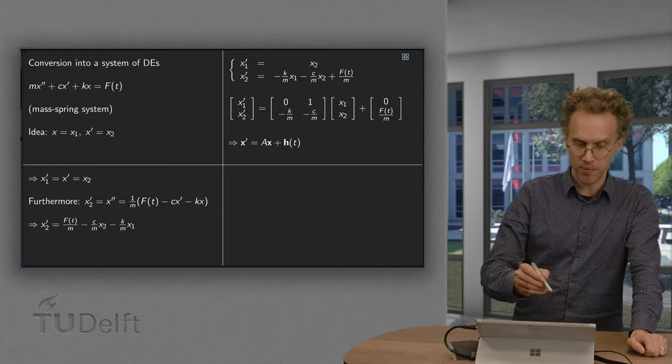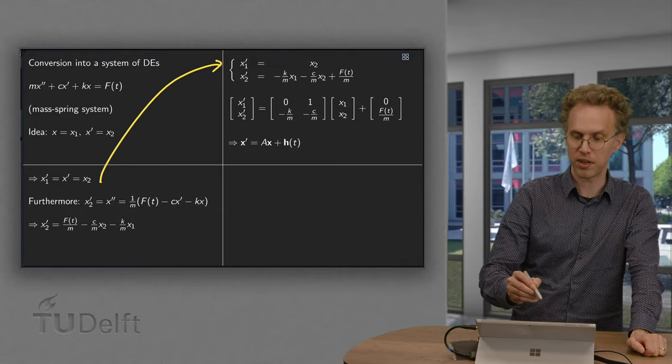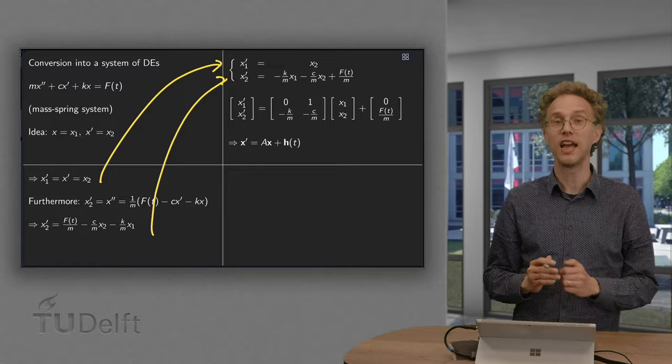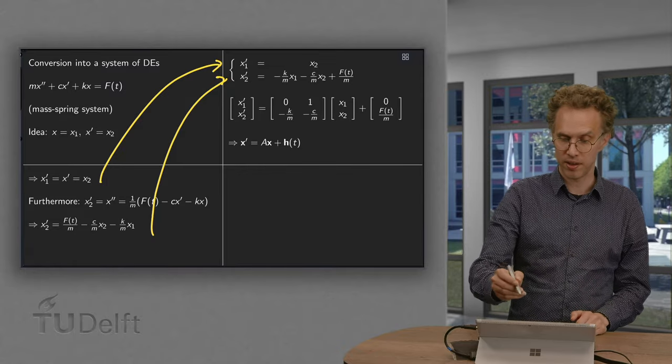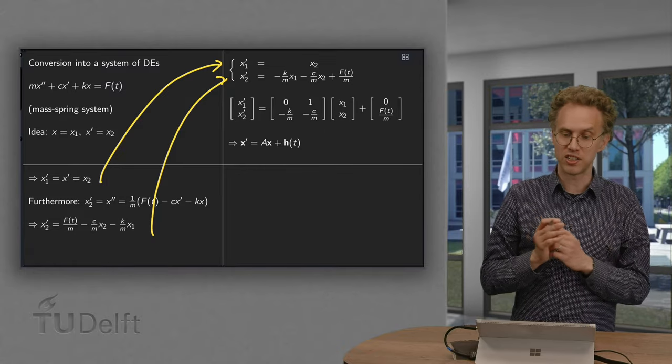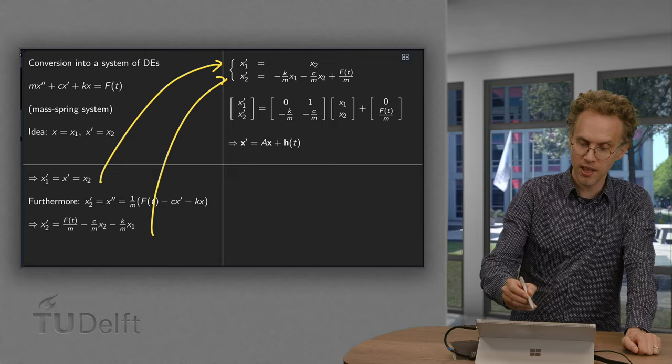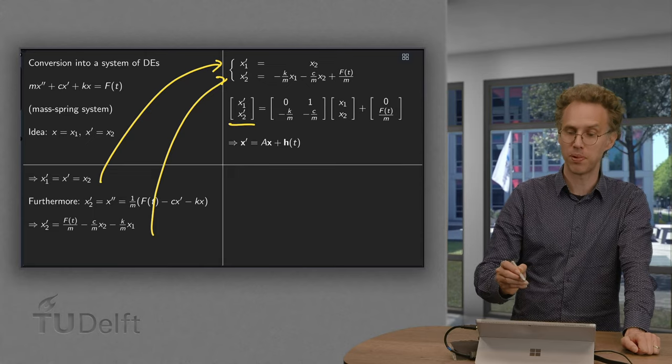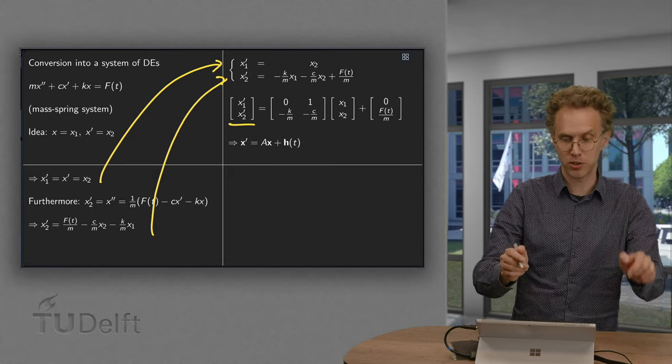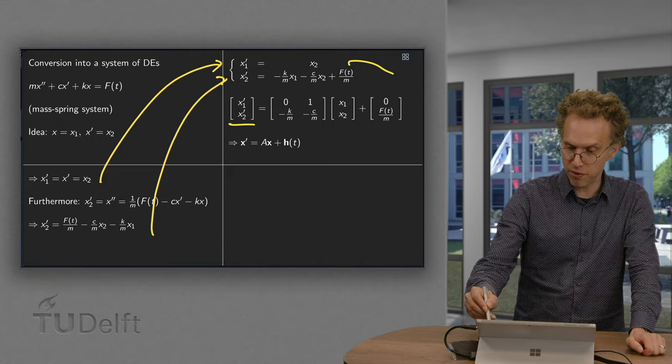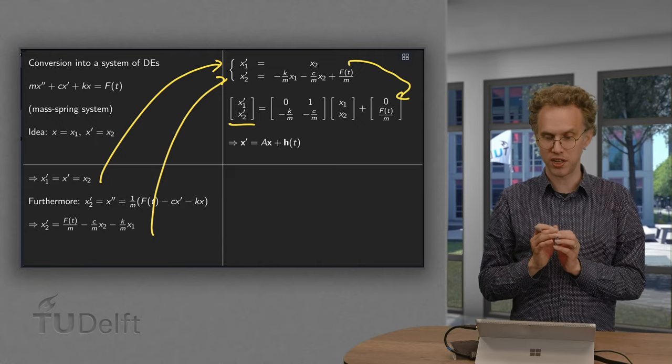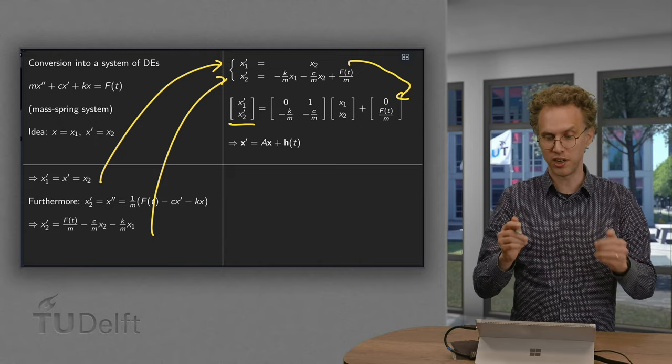So, to summarize, here we have x1 prime equals x2, and here we have the expression for x2 prime. And we can write this into a matrix equation. Write x1 prime and x2 prime in a vector. Then x1 prime, x2 prime. Here the first row is the first equation: 0 times x1 plus 1 times x2 plus 0.